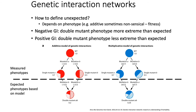In the multiplicative model of genetic interactions, if the phenotype of mutant A is 0.7 and mutant B is 0.5, the multiplicative effect of knocking out gene A is 0.7 and knocking out gene B is 0.5. So your expected phenotype of the double mutant would be 0.7 times 0.5 times 1, which gives you 0.35.